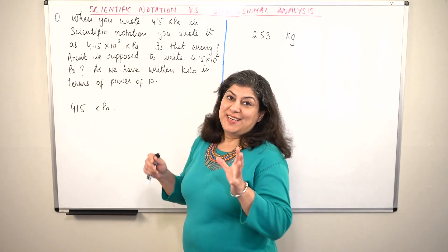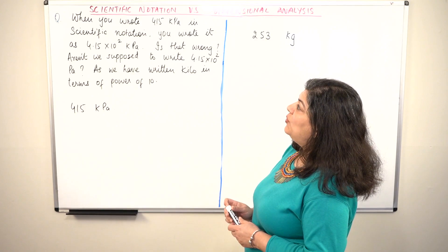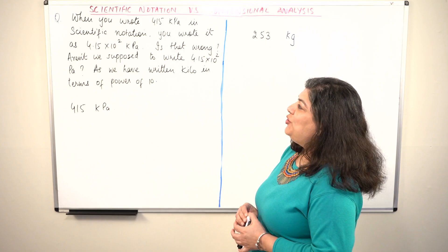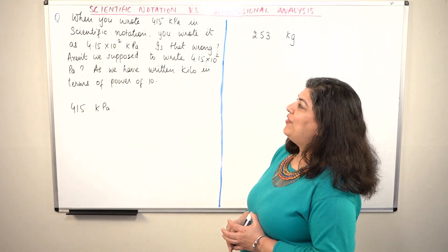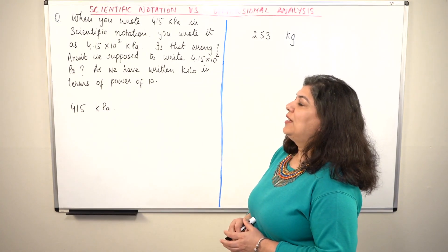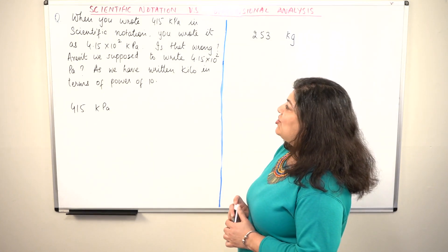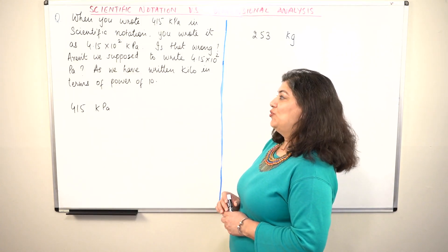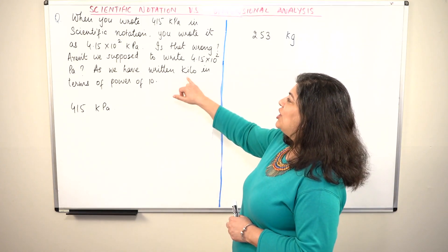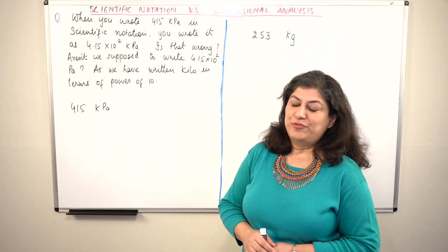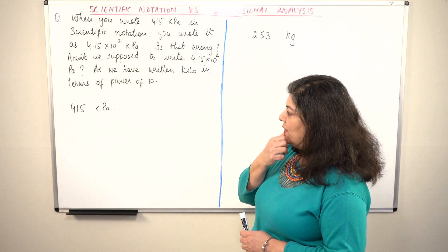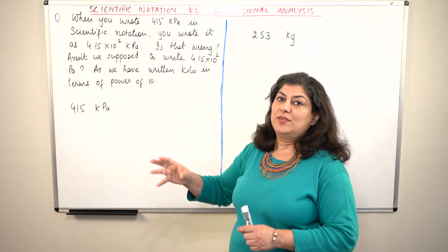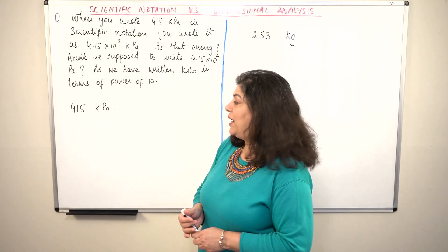The question he or she asked was: when you wrote 415 kilopascals in scientific notation, you wrote it as 4.15 × 10² kilopascals. Is that wrong? Aren't we supposed to write 4.15 × 10² pascals, since we have written kilos in terms of a power of 10? In the question I had solved in that video, I got 415 kilopascals as one of the steps or the answer.